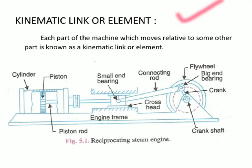Due to this transmission, motion is made possible, and ultimately power is also transmitted. If all parts are not linked, power cannot be transmitted. Any part of a machine which is related to another part and moves relative to it is called a kinematic link or element.